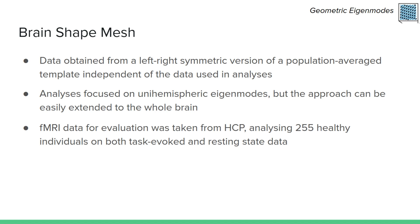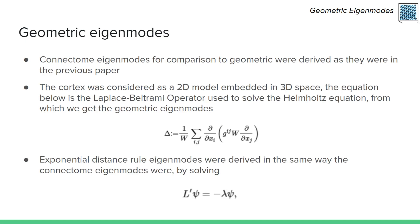For calculating the geometric eigenmodes, a 32,492-vertex triangular surface mesh of a brain hemisphere from FreeSurfer's FS-Average population average template was used. This was done with the LaPy Python library's cubic finite element method, interpolating through the discrete dataset to create a smooth manifold for the Laplace-Beltrami operator to act on. All analyses focused on unihemispheric eigenmodes, but because bi-hemispheric eigenmodes can be represented as symmetric or anti-symmetric combinations of unihemispheric eigenmodes, the approach extends easily to the whole brain. Pre-processed fMRI data of 255 unrelated healthy individuals from the Human Connectome Project was used to assess the reconstruction accuracy of geometric eigenmodes and other basis sets. Connectome eigenmodes were derived here in the same way as in the original CSHW paper.